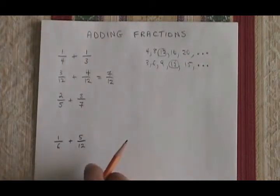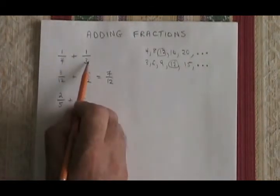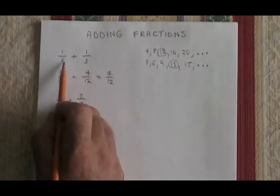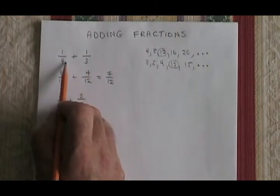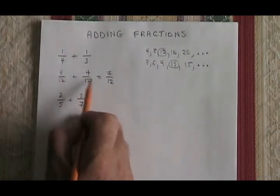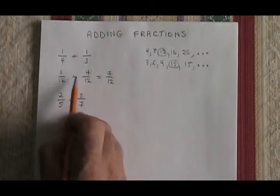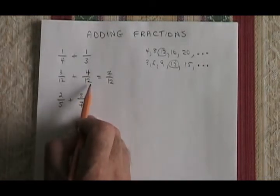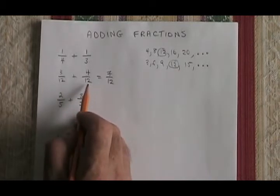There is a possible shortcut. If you notice that 4 times 3 is 12, then you can see that multiplying the denominators of the fractions you started with gives you a common denominator. And in this case it would happen to have given you the lowest common denominator, but it's not always going to be the lowest.